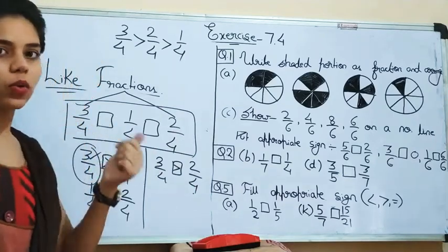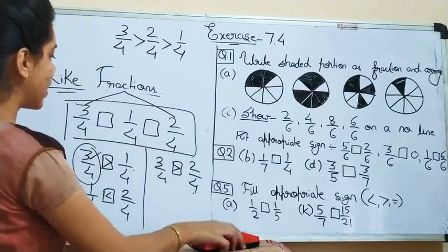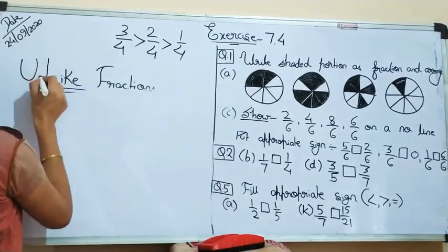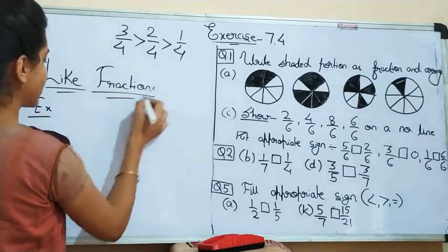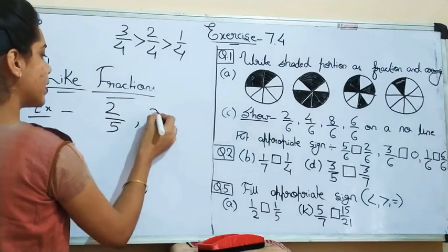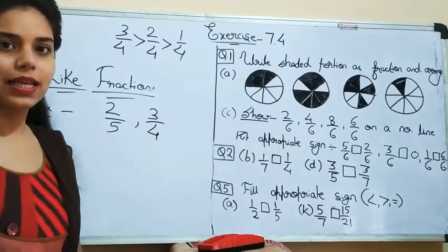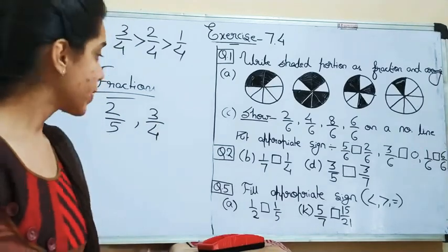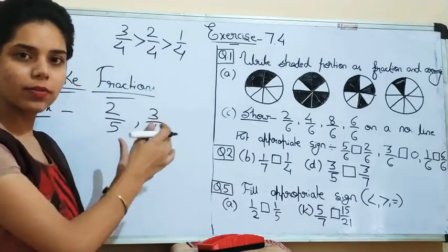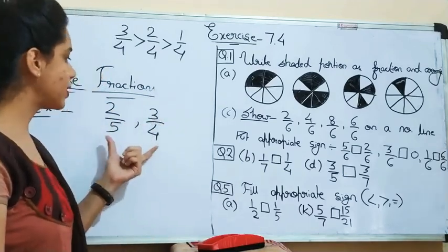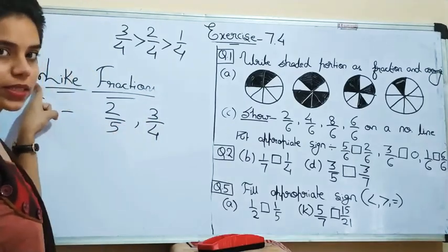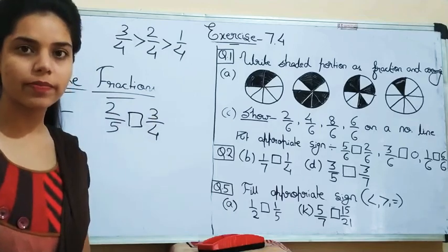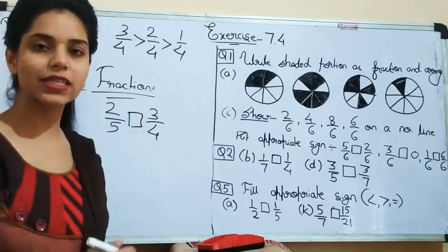Now what will we do if they are unlike fractions? We will see another example. If they are unlike fractions — for example 2 by 5 and 3 by 4 — their denominators are different, meaning they are unlike fractions. To compare which fraction is greater or smaller, we will first convert this unlike fraction into like fraction.